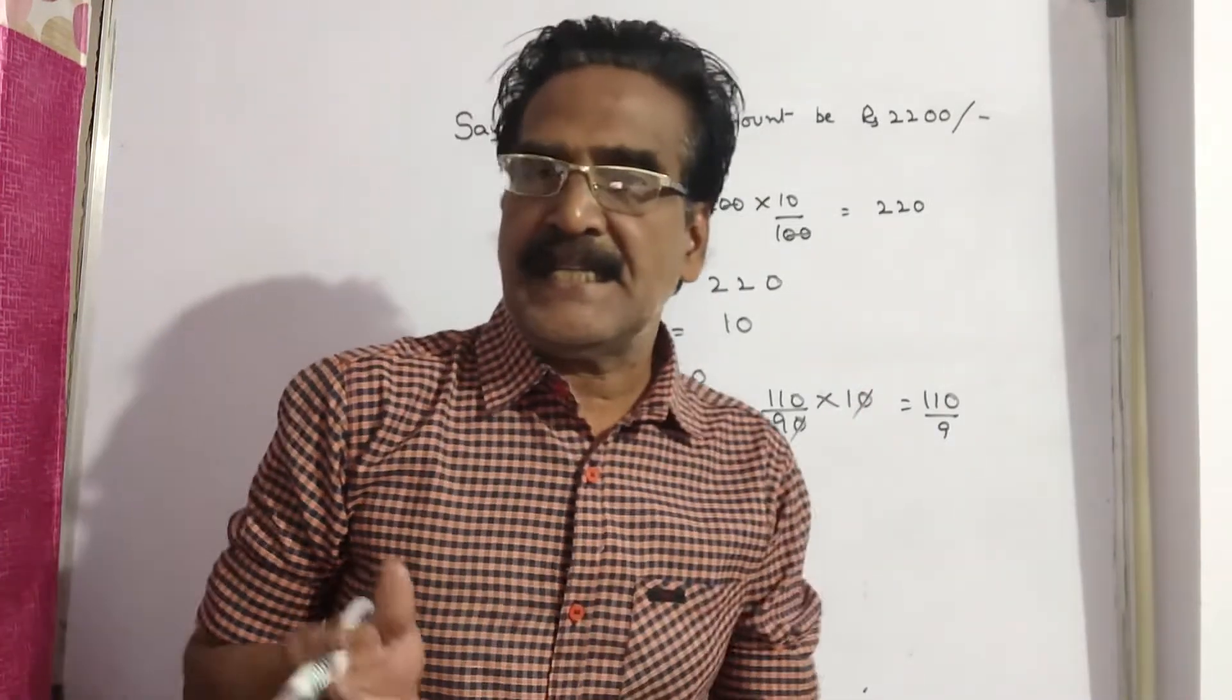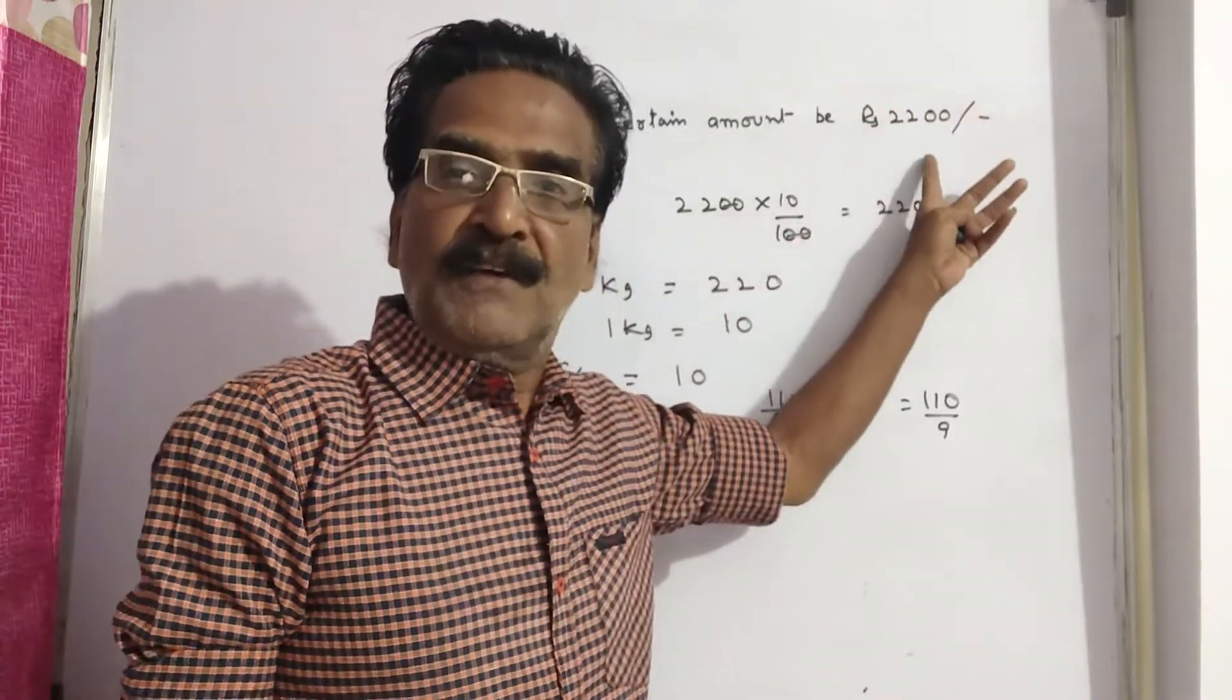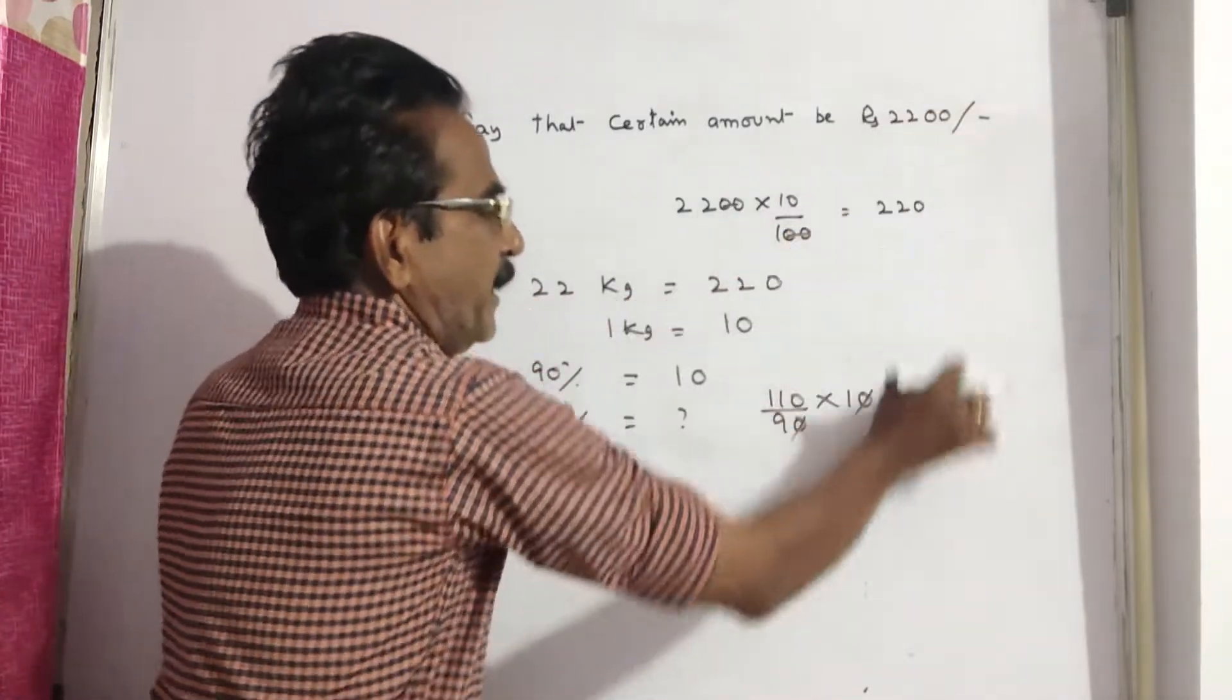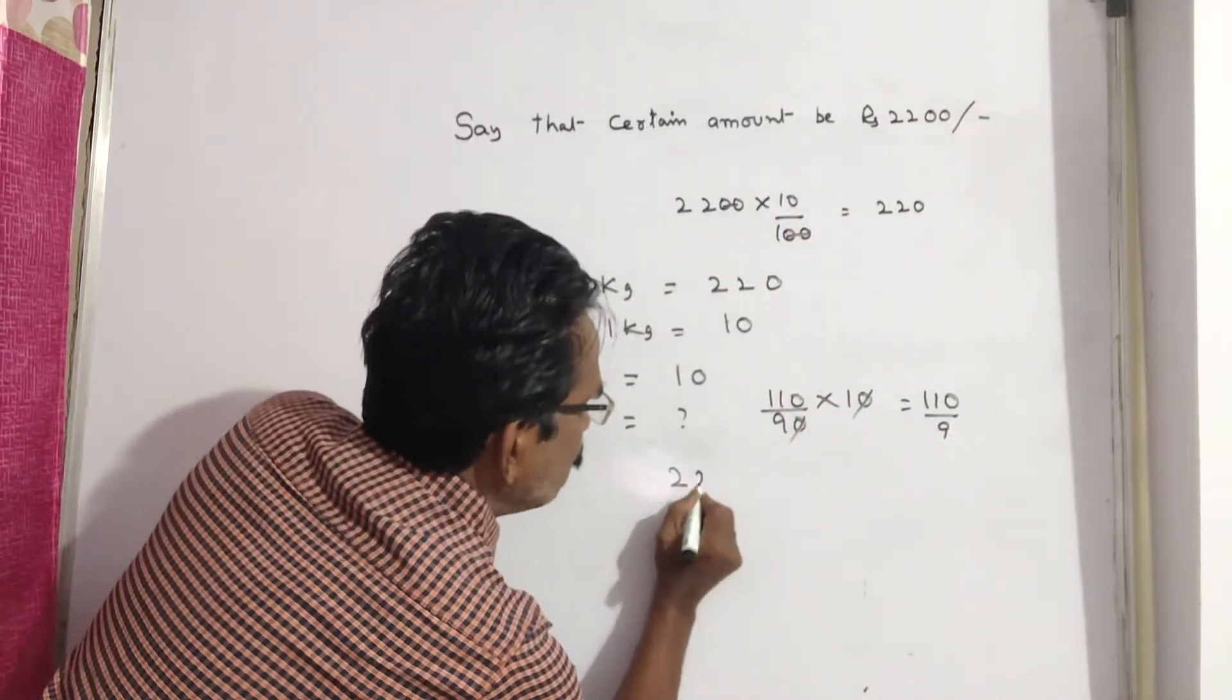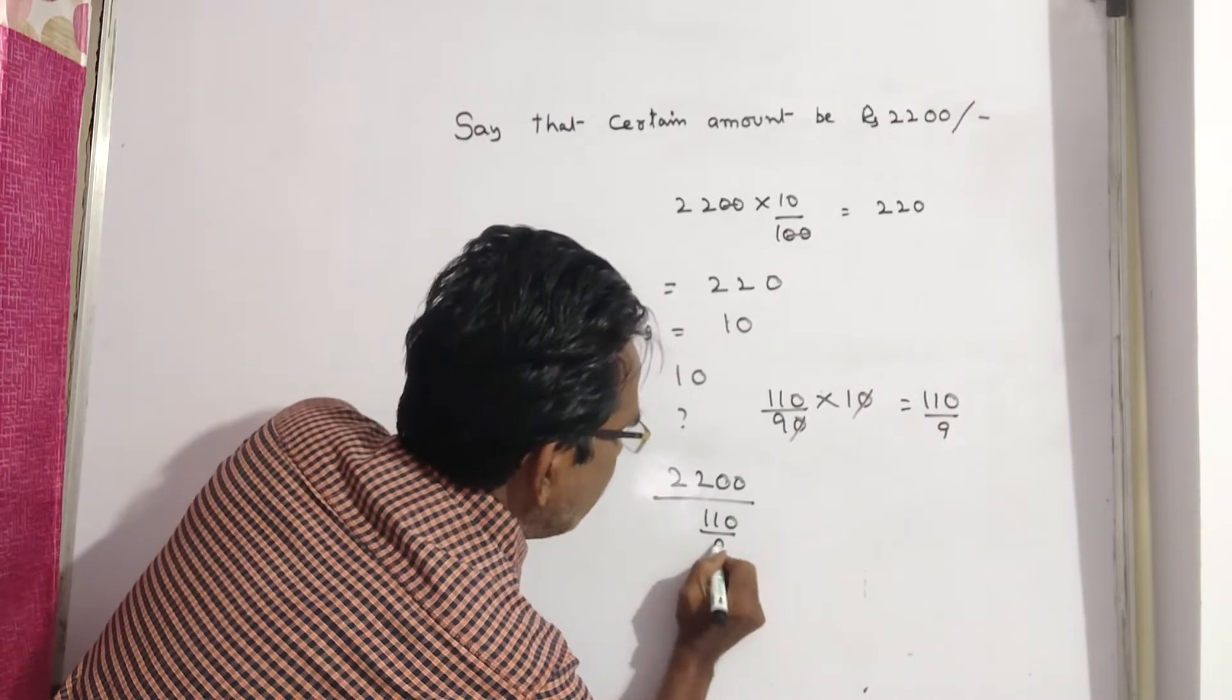Now the question is, how many kg of sugar could have been bought for the amount at increased cost? So this, the total amount, 2200 divided by the increased cost of 110 by 9. 2200 into 9 by 110.